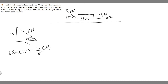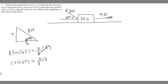Now let's do the x component. We use cosine: cosine of 62 degrees equals adjacent over hypotenuse, which is x over eight. So x equals eight times the cosine of 62 degrees.